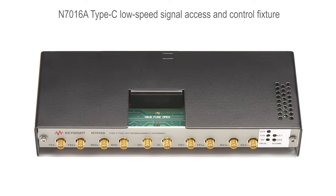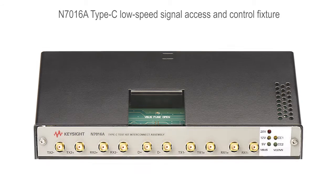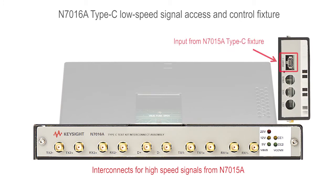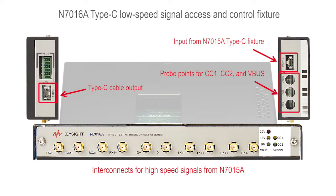A little more detail on the low-speed fixture. Along the front we have connections that can take the high-speed connections and pass those through. On the side we have the input for the USB Type-C. We have probing points for CC and for VBUS. On the other side we have the USB Type-C cable coming out to go over to a test device or a fixture. And then we have the power input that can be connected to a Keysight power supply or other input power supply.